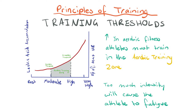If athletes wish to improve their aerobic fitness, they must train at a sufficient intensity to see gains in their aerobic system. We don't want intensity too high because this will cause fatigue quickly. To understand training thresholds, we're going to explore the aerobic training zone concept.